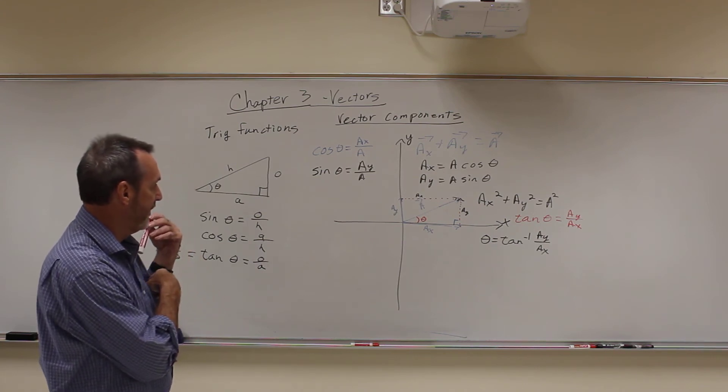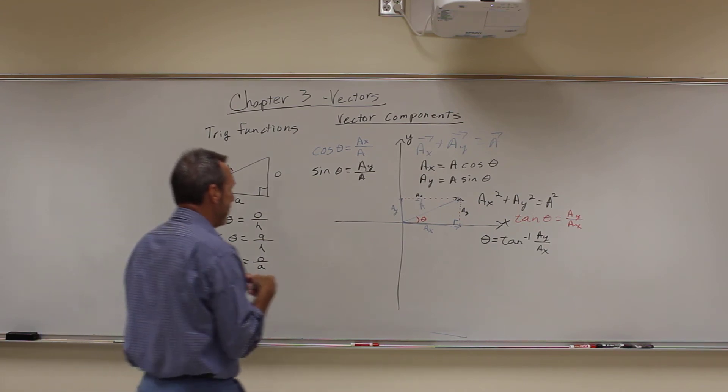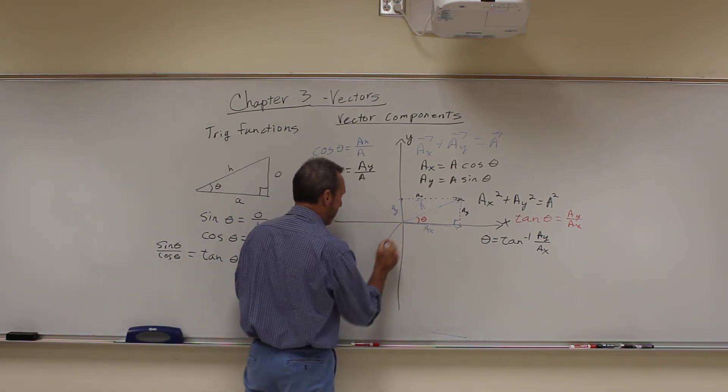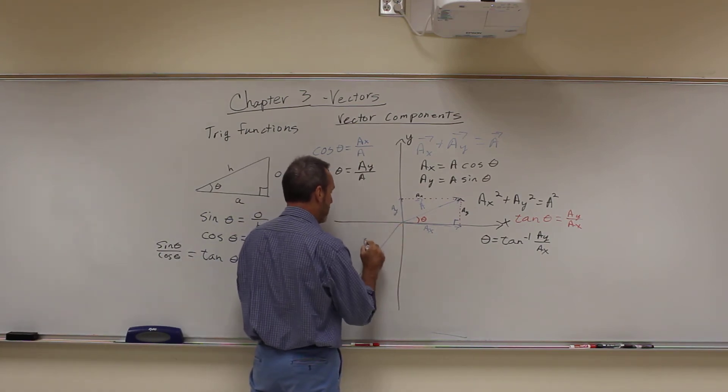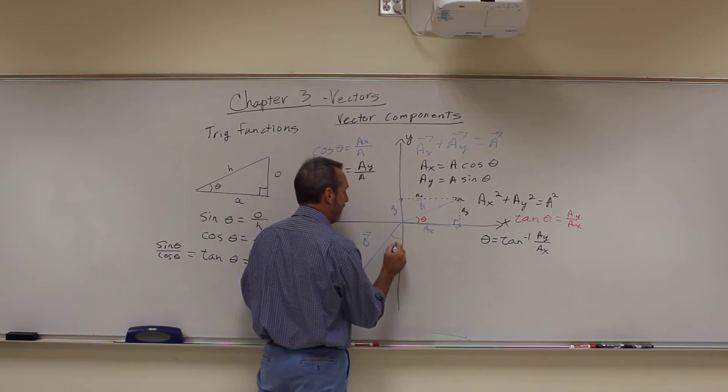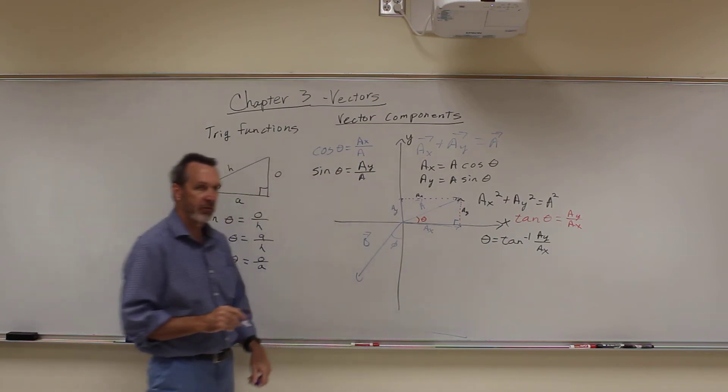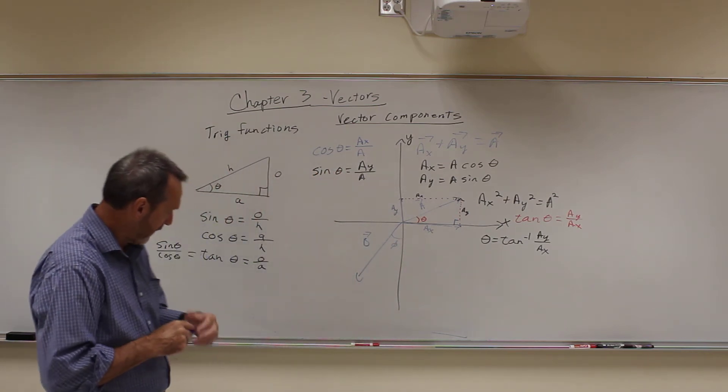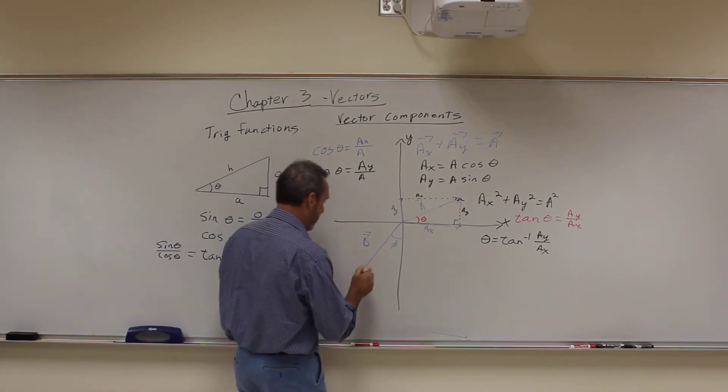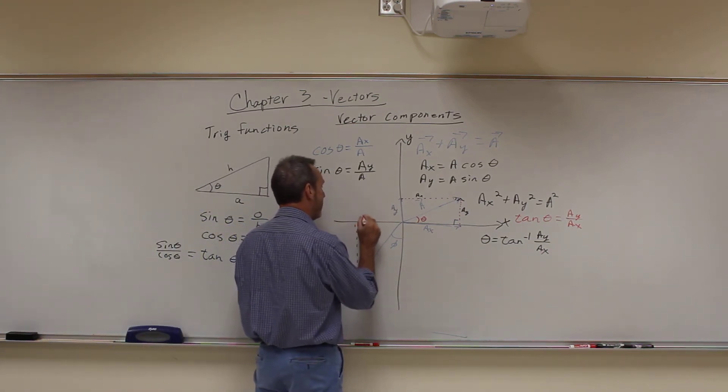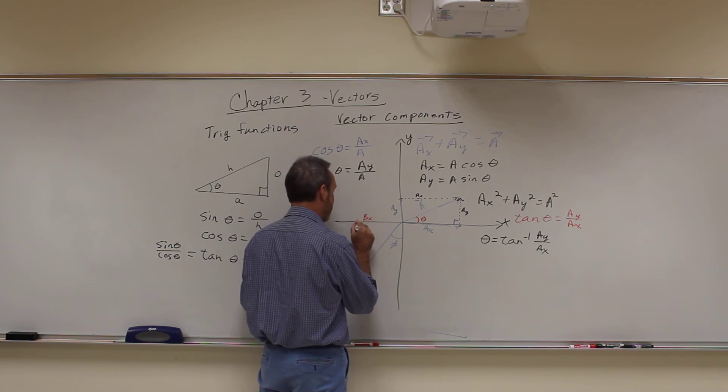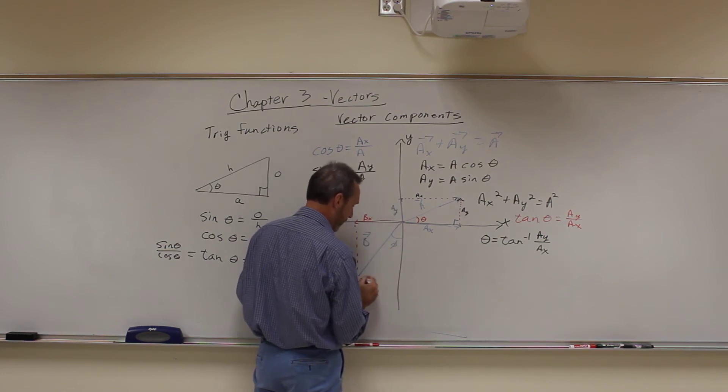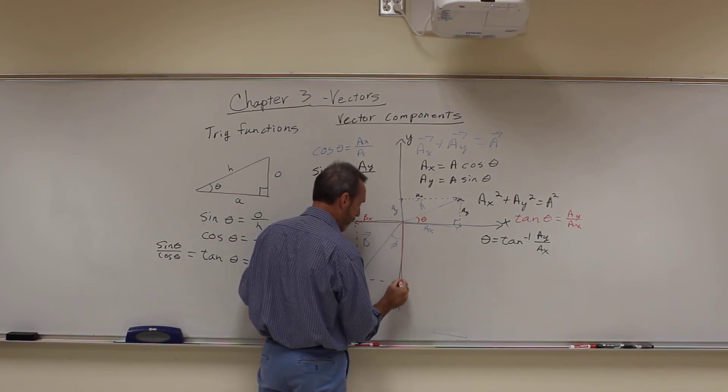Okay? Now, that looks great, but what if I have something like this? I'm going to do vector B going this way, and this angle I'm going to call phi, just so I don't get confused with the other one. Well, in that case then, I drop a line here, this is BX, vector BX right here, and go this way, this is vector BY this way.